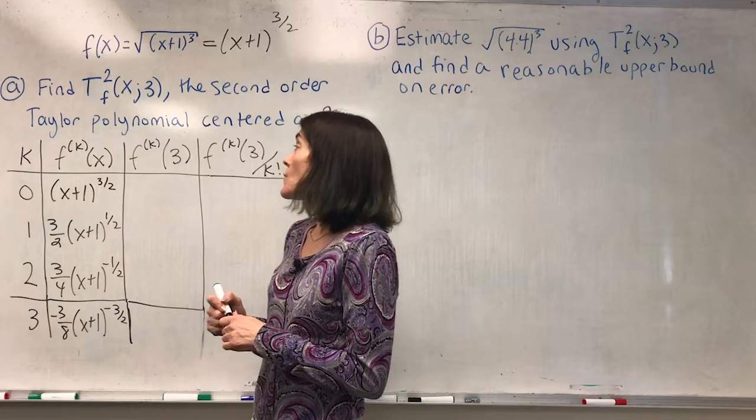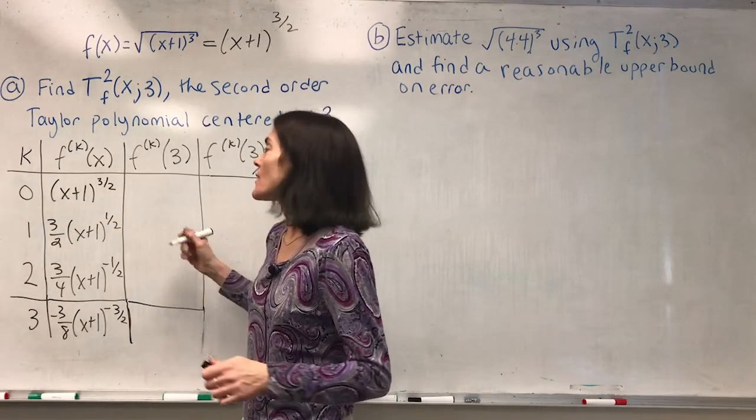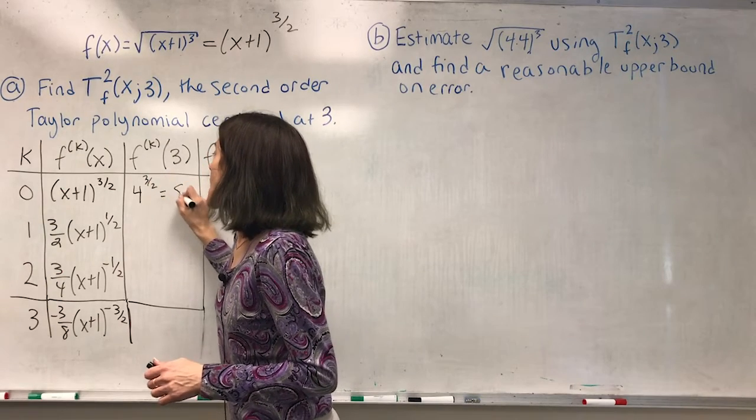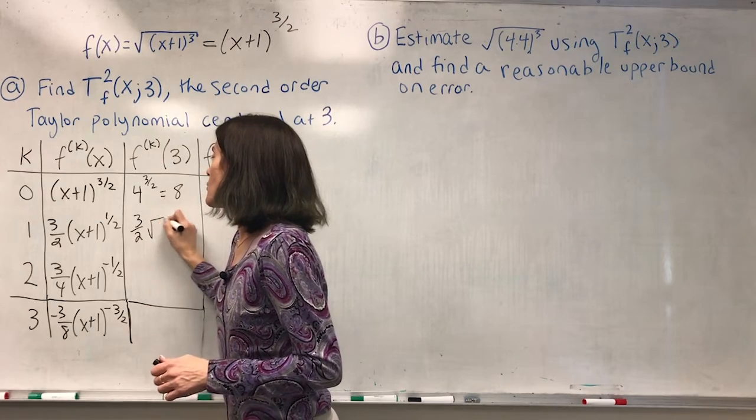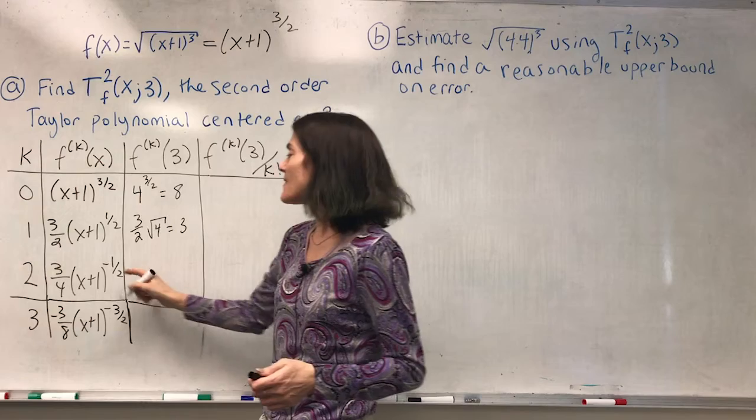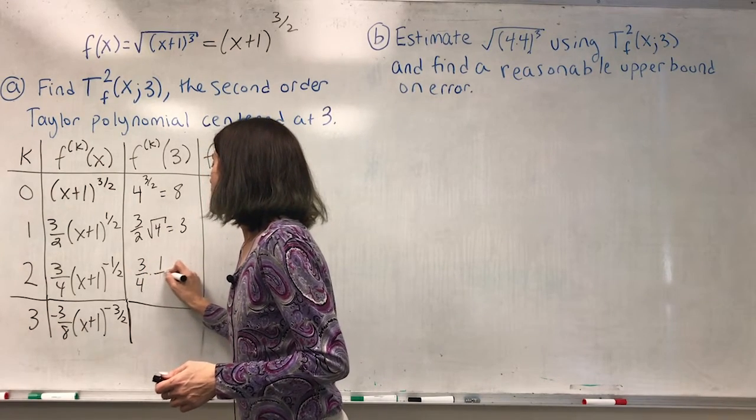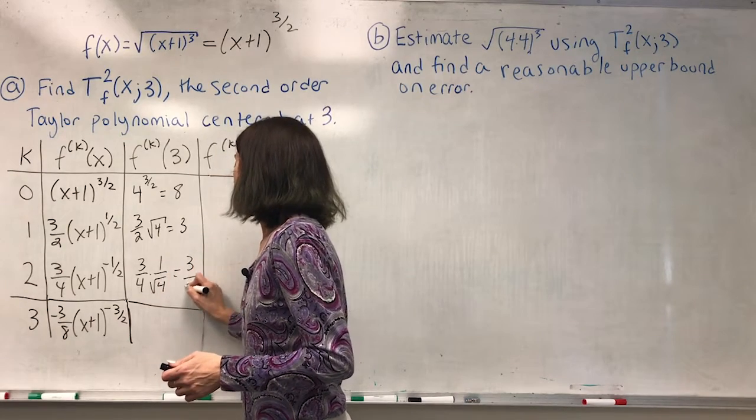Now I start evaluating at 3. Well, 3 plus 1 is 4. This will work out nicely. Here I get 4 to the 3 halves, which is 8. Here I have 3 halves square root of 4, which is 3. And then I have 3 fourths. Here the square root is in the denominator, which gives me 3 over 8.